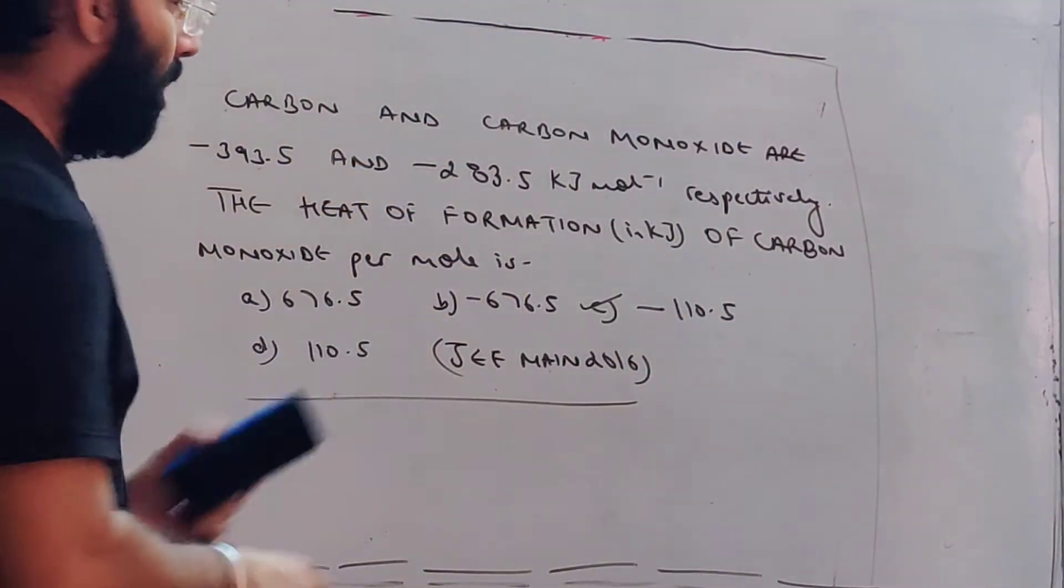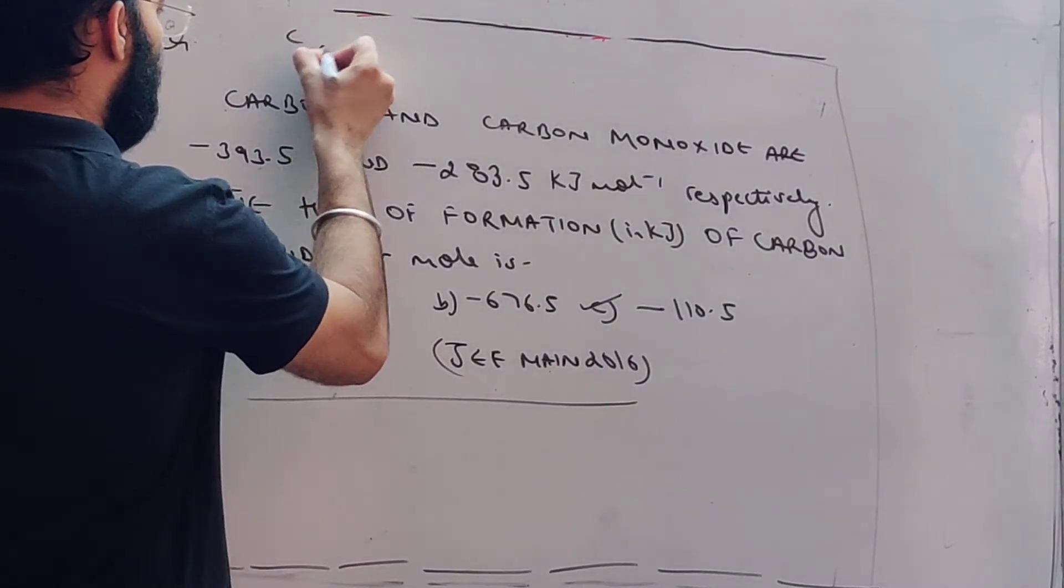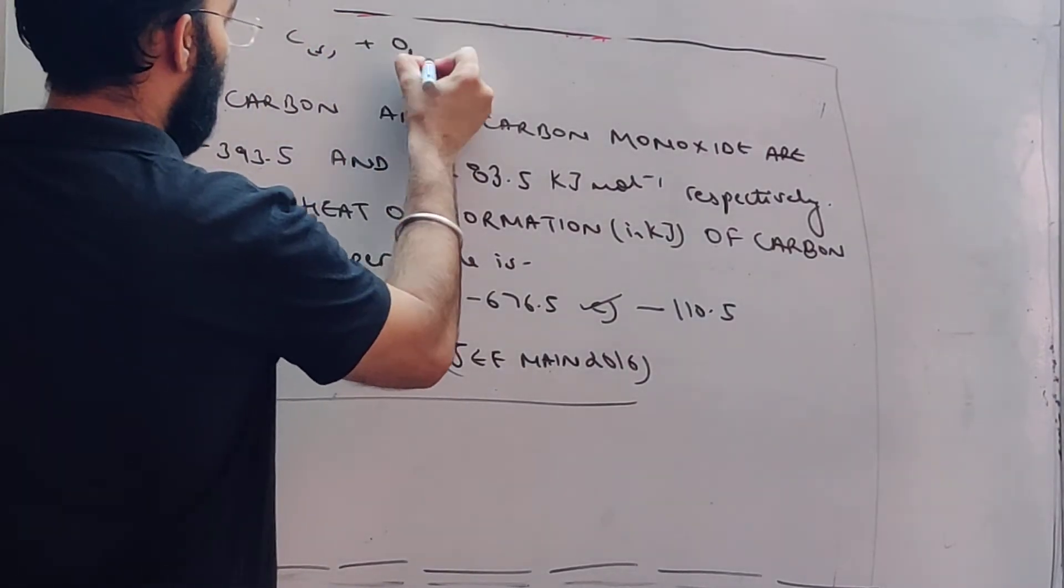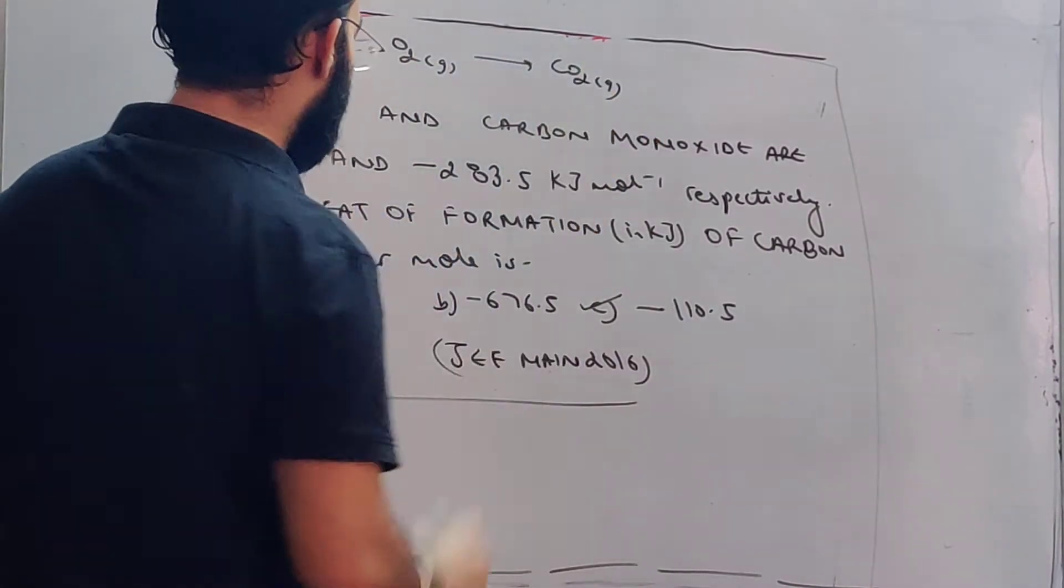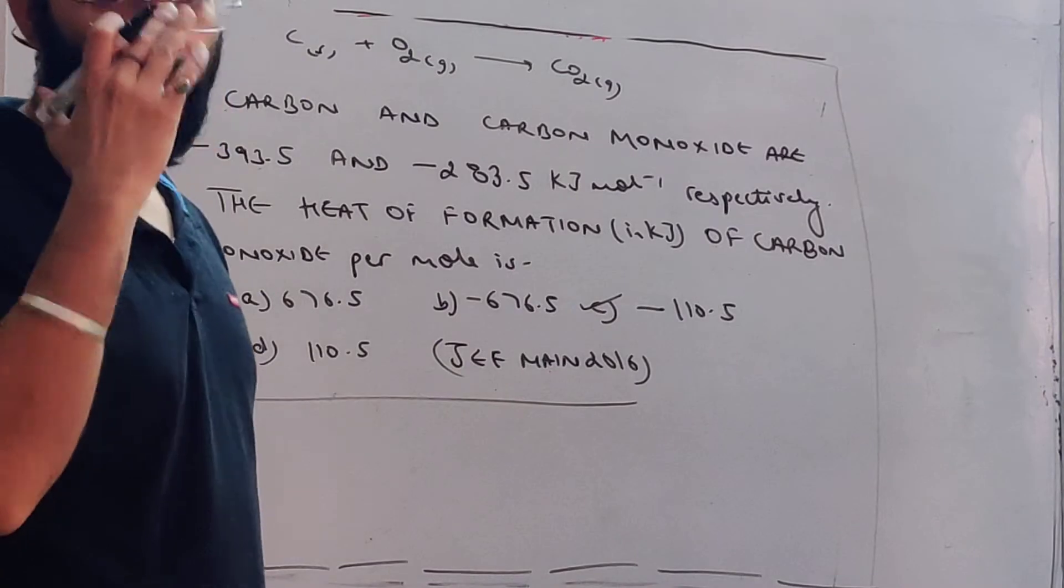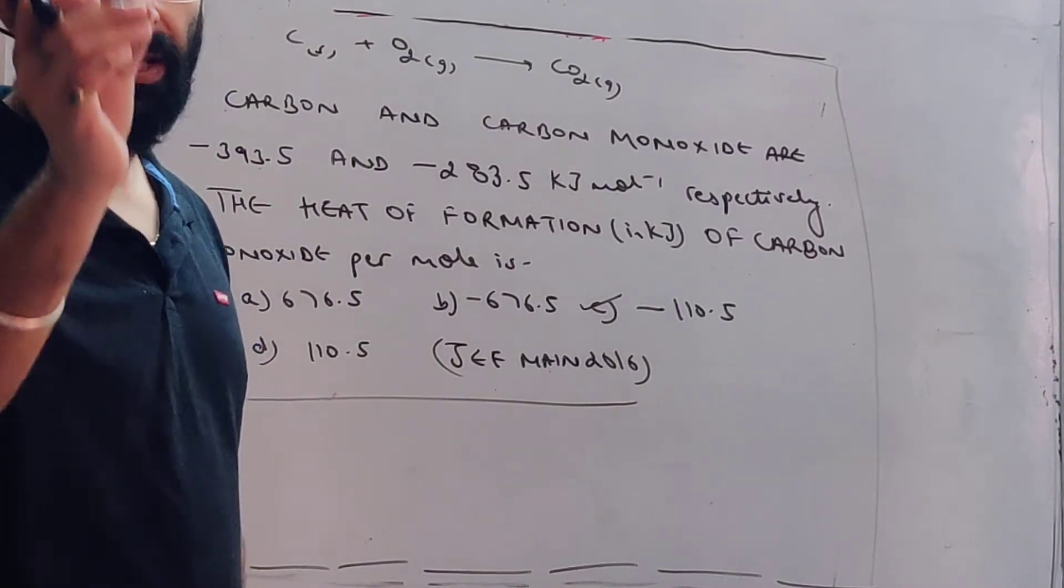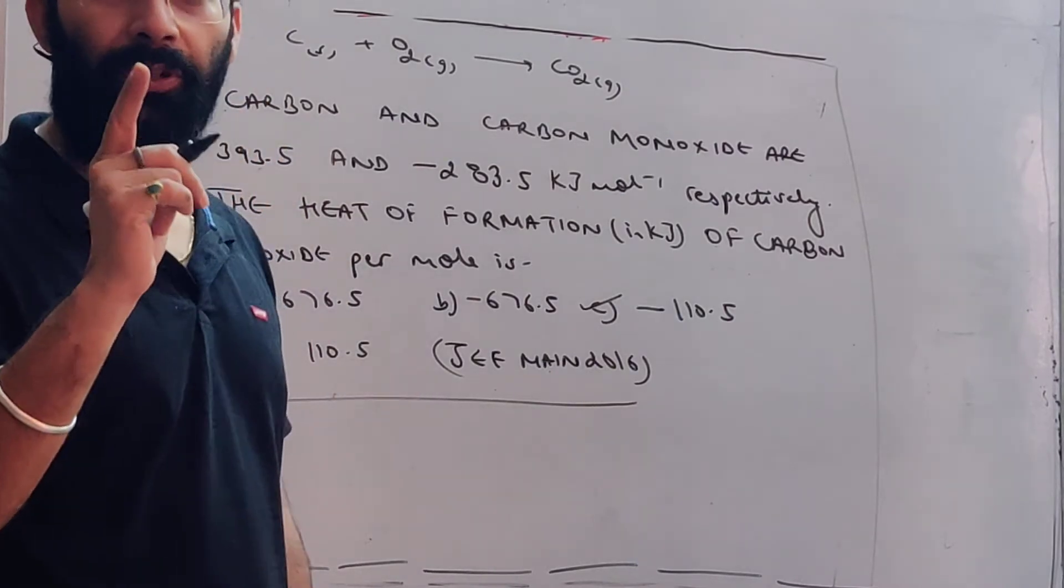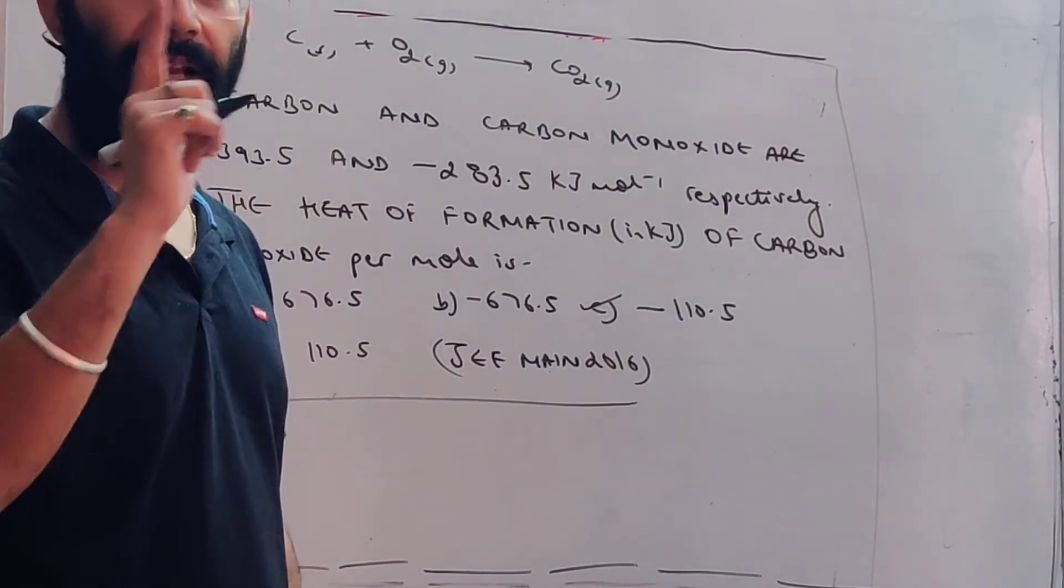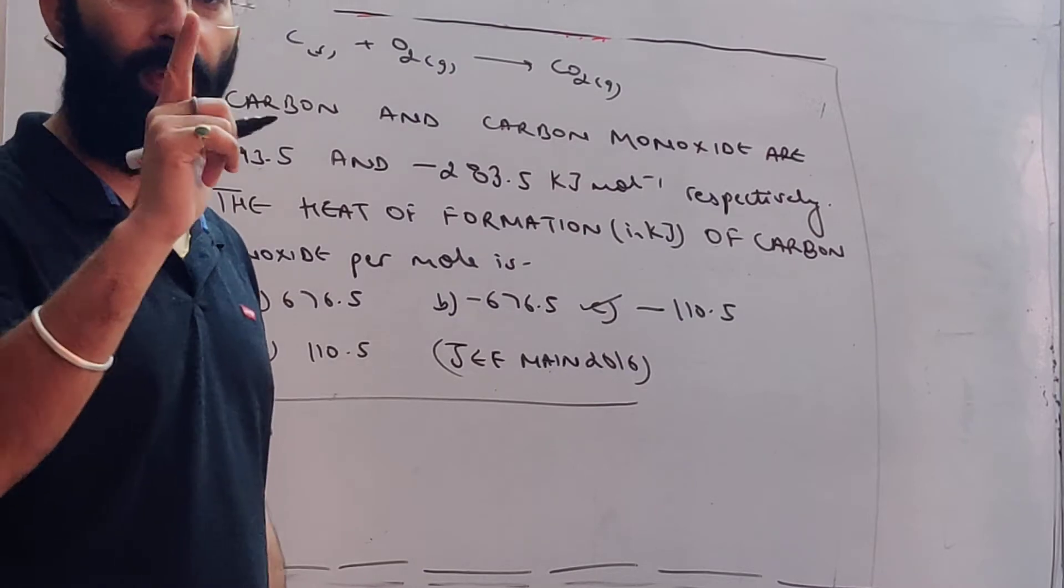The heat of combustion is given for carbon. The heat of combustion means what? Look, combustion is an exothermic process. This means that heat is always coming out of combustion. If heat is coming out, the value will be negative. And one more thing, the heat of combustion is defined for one mole.